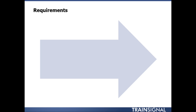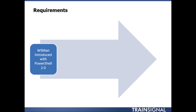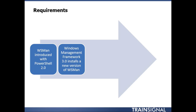In order to use remoting, there are some things we need to do. The WSMAN protocol and the WinRM service were first introduced with PowerShell 2, and these are all part of the broader Windows Management Framework that we've installed to get PowerShell. The new version, version 3, includes a newer version of WSMAN, although a lot of what I'll demonstrate in this lesson really applies to version 2.